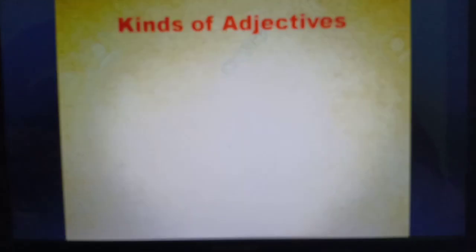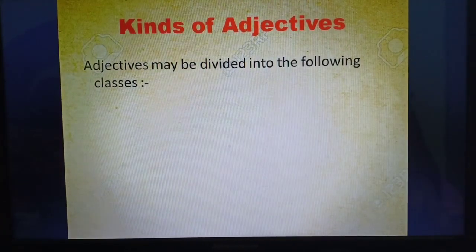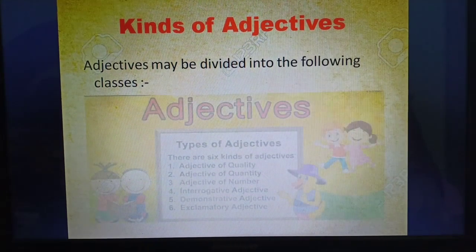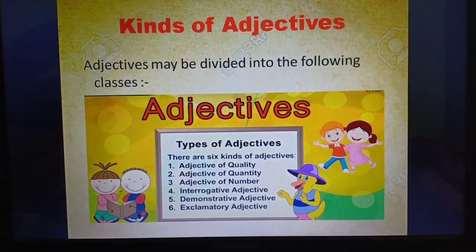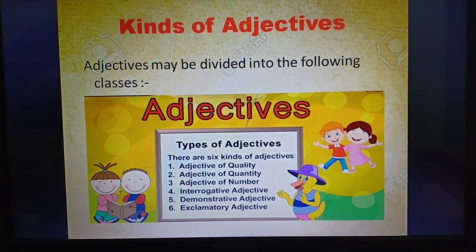Now there are different kinds of adjectives. Let's look into that. Adjectives may be divided into the following classes. There are six kinds of adjectives. Number one: adjective of quality. Number two: adjective of quantity.